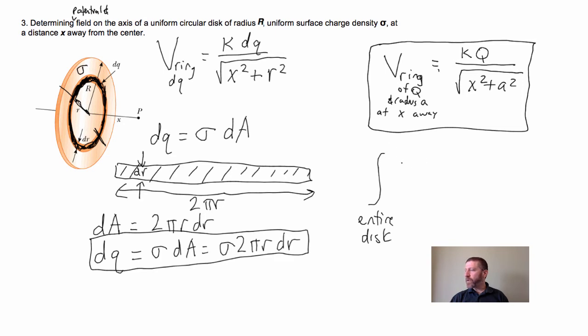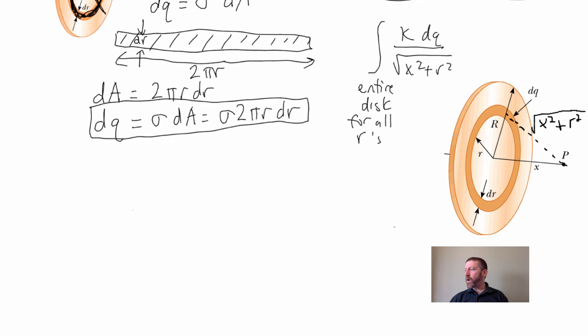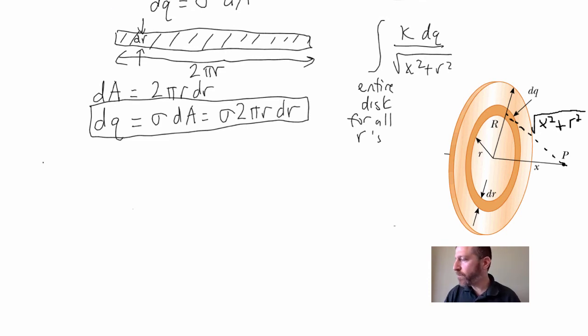...all the different DQs. In other words, we're going to integrate KDQ over square root of X squared plus R squared for the entire disk, which just means for all the R's. All the different radii from right here to right there, all the way out to big R. That's all we've got to do. Let's go ahead and do that. I'm going to rewrite my integral in a good form.